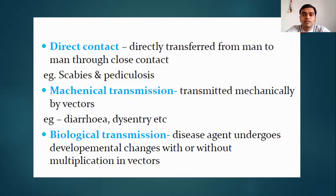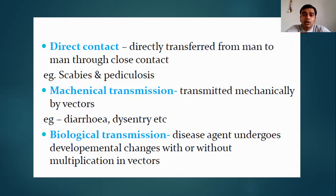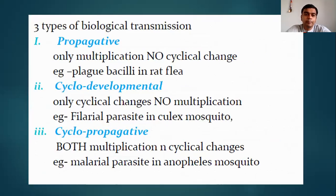To summarize: in direct contact transmission, the disease-causing agent is mostly the insect itself — example: Scabies and Pediculosis (head lice). In mechanical transmission, the disease-causing agent is just transported from one place to another through flies, etc. In biological transmission, the parasite, bacteria, or virus gets inoculated into and infects the mosquito or insect, and when that insect bites another person, the susceptible host gets infected.